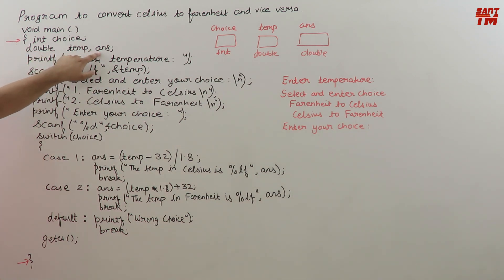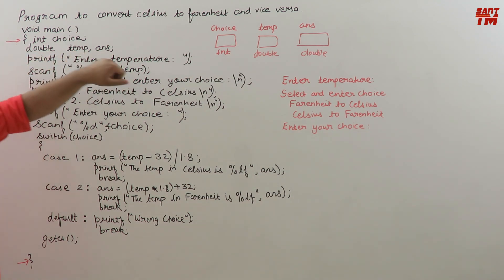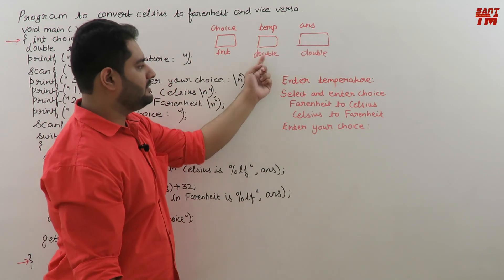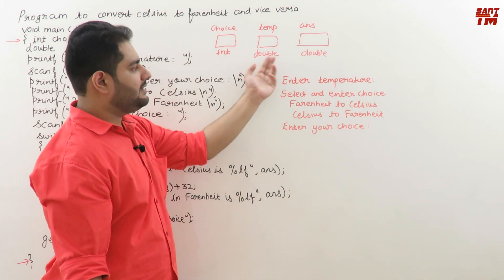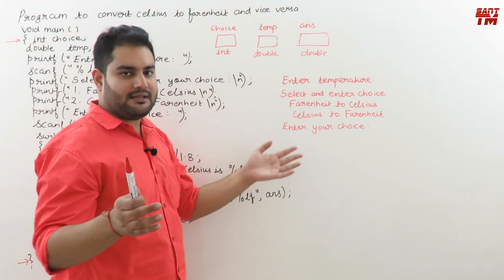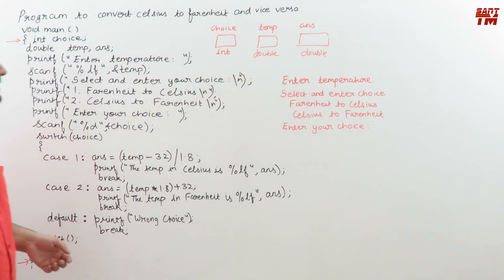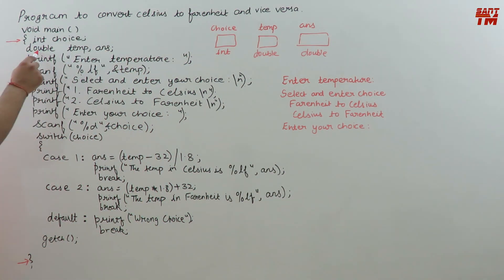Double temp, ans - memory will be created and both are of double type. Double basically has more range than float in C programming language. We've taken double because after calculation the answer can be larger, so to hold that answer correctly and precisely we use double, not float. You can take float also. Then printf enter temperature.